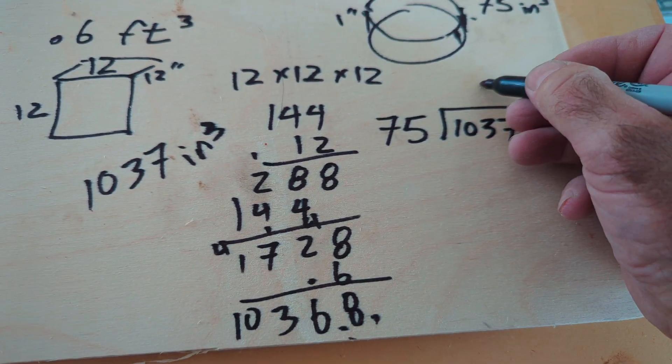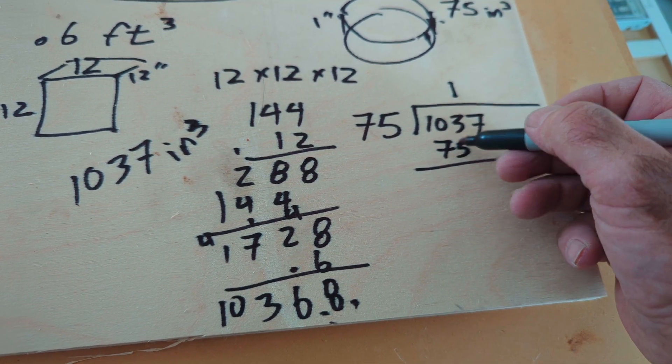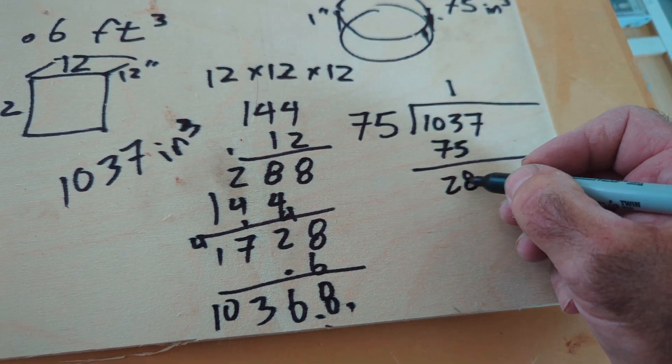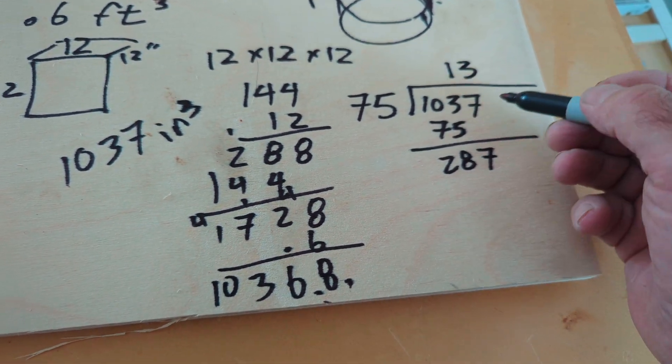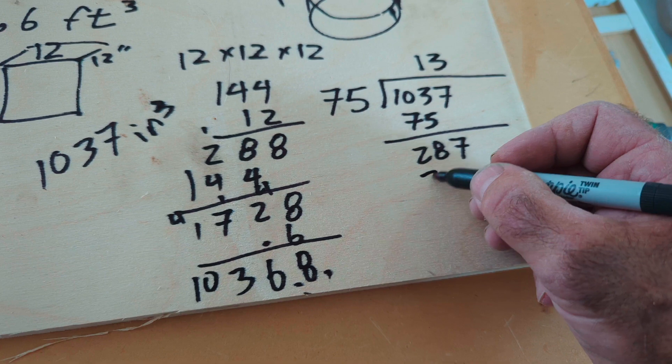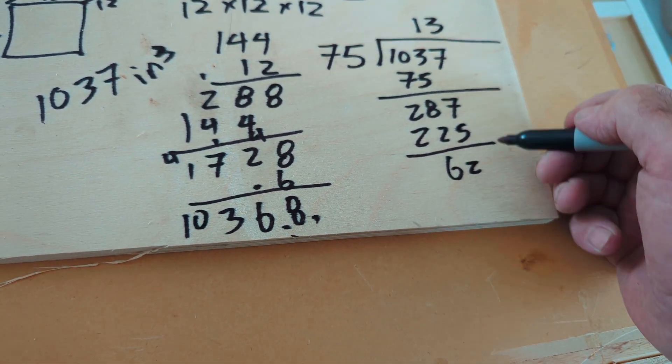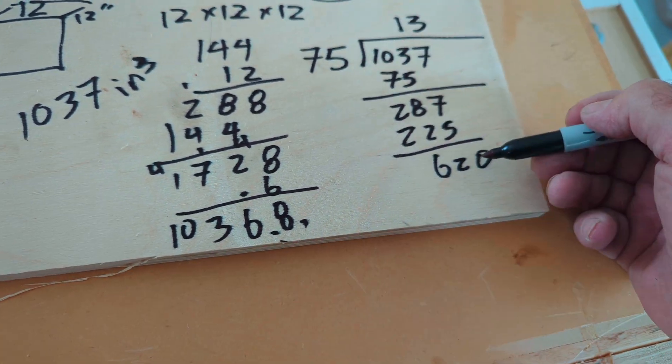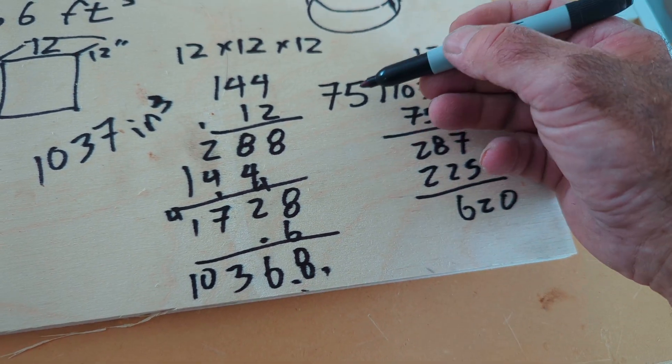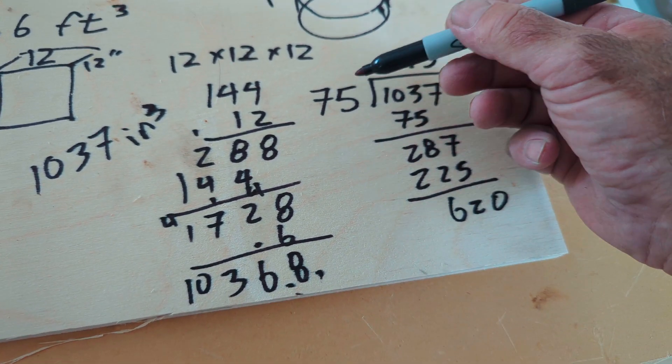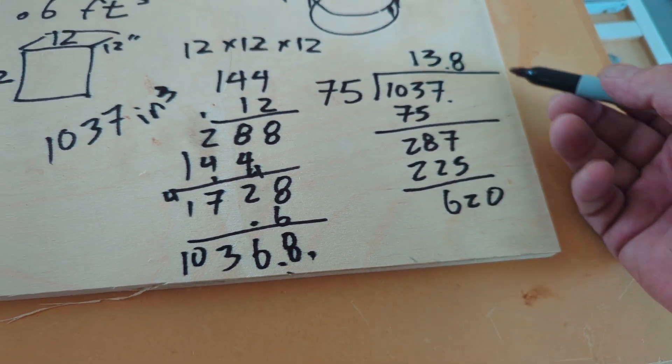All right. So it goes in there once. 75. Bring down the 7. 75 into there, it's three times. Bring down the 0. 75 into 620, it's probably 8. So the decimal place would be there. It's 13.8.